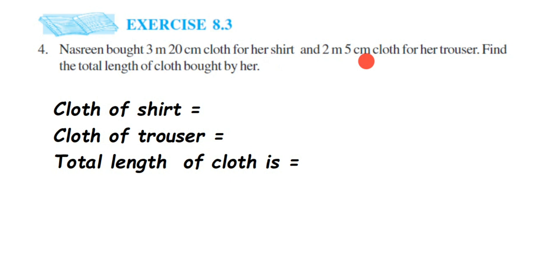Cloth of shirt is 3 meter 20 centimeter, right? So this will be equal to, if I write this in decimal, it will be 3.20 meter. I have converted this, so it will be 3.20 meter.